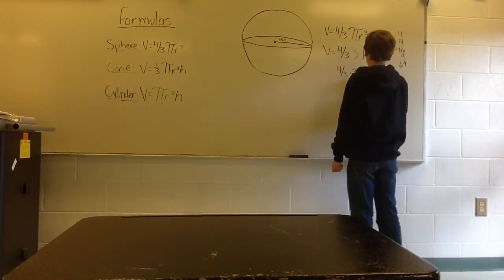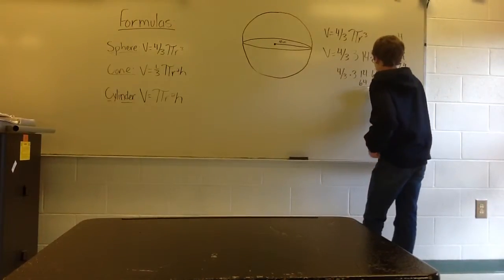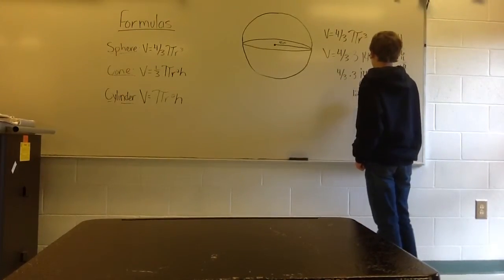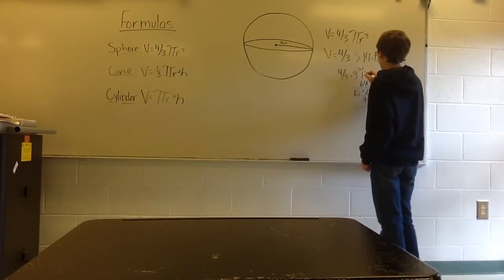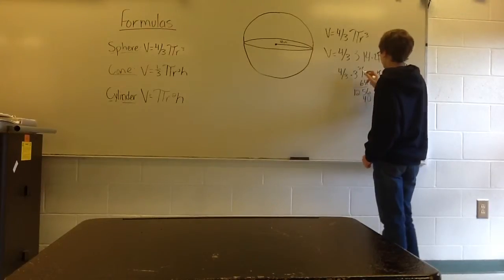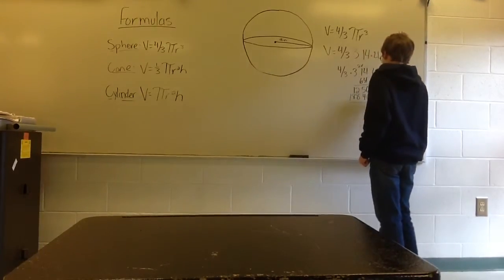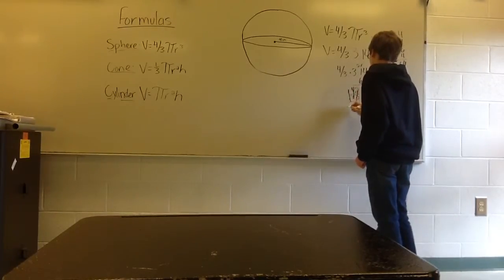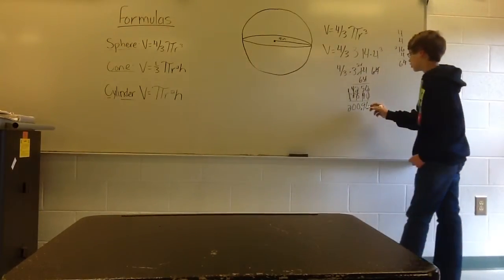We are going to multiply 3.14 by 64. So 4 times 4 is 16, bring your 1 over, 4 times 1 gives you 4 plus 1 gives you 5, and 4 times 3 gives you 12. Then 6 times 4 gives you 24, bring the 2, 6 times 1 gives you 6 plus 2 gives you 8, and 6 times 3 gives you 18. Add it all up, count your decimal places — you have 2 — so bring it over. Your answer is 200.96.